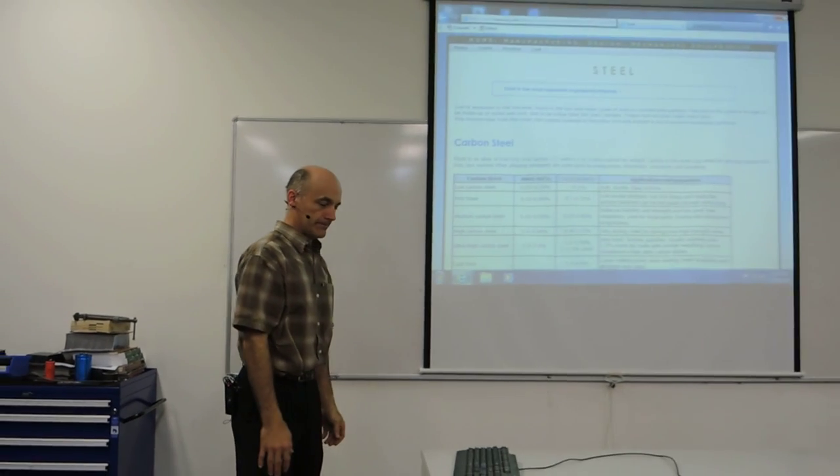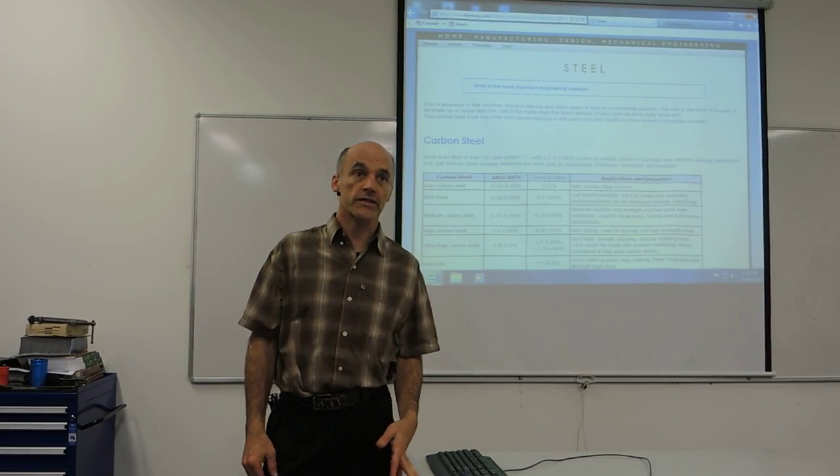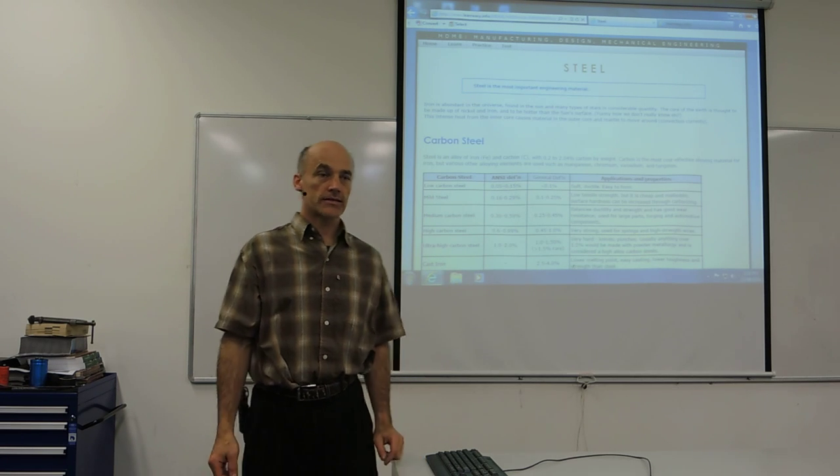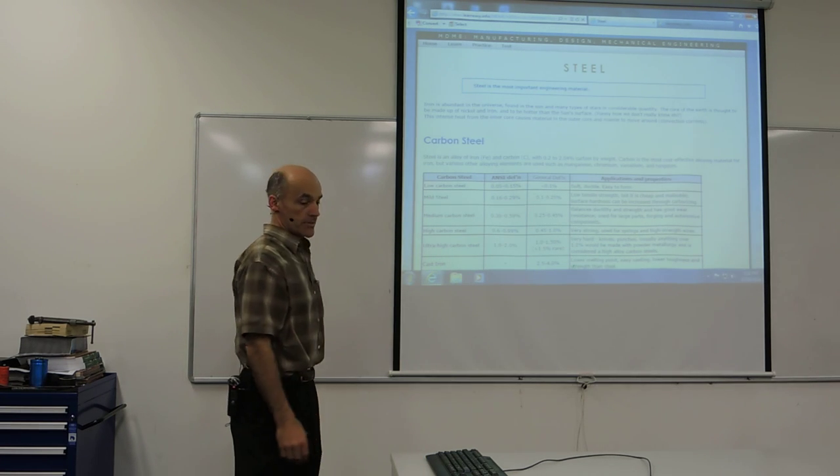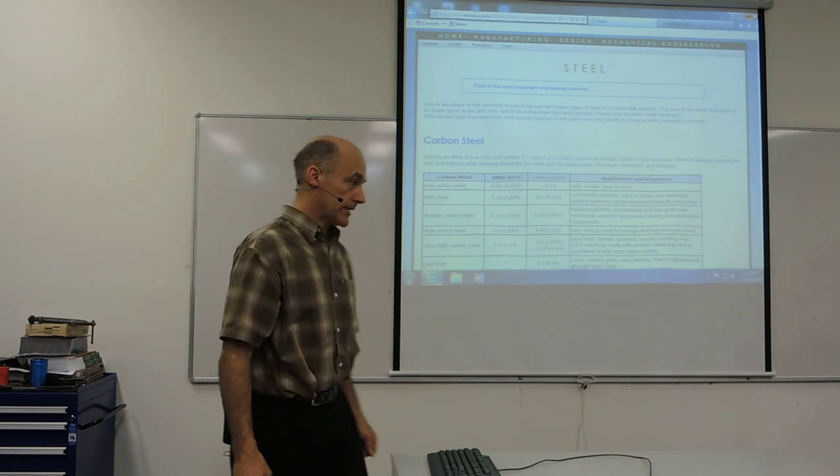All right, steel. Now, the most important ingredient in steel, in fact, the definition of steel is iron plus carbon. Because the main atom in steel is iron. Fe. Iron has the symbol Fe.